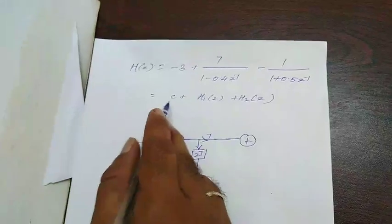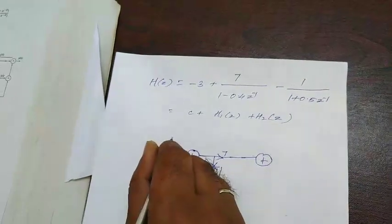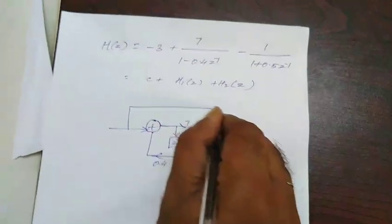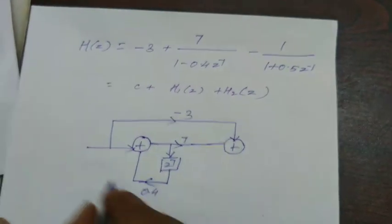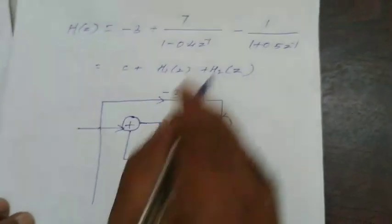For this one, you are parallely connecting this c also. C is parallely coming here and that is also added here. That is minus 3. Then this one parallely connected to third system.